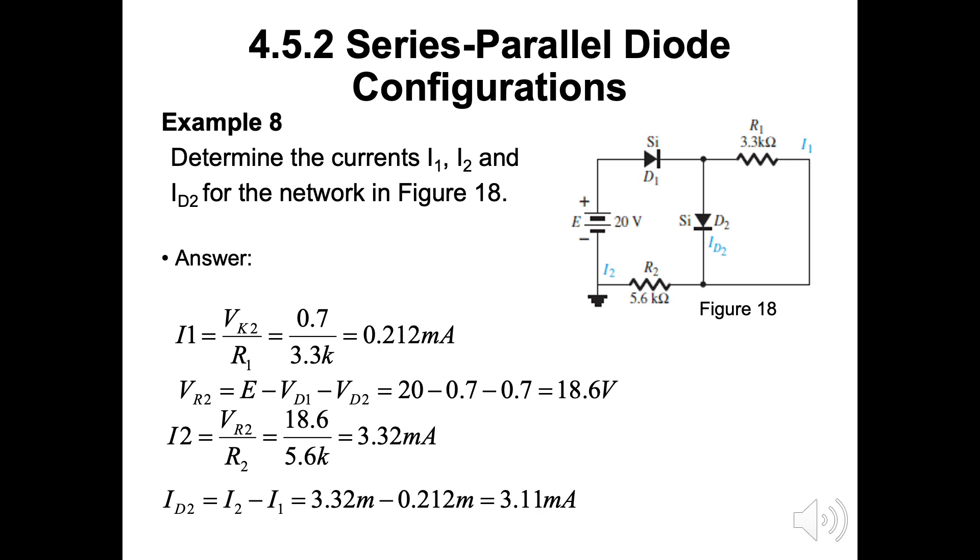Example 8. Determine the currents I1, I2 and ID2 for the network in figure 18. Here Vr1 is similar to Vd2 as they are parallel. I1 is Vr1 by 3.3kΩ then will be 0.212mA. Vr2 is analyzed by considering the loop on the left hand side involved E, D1, D2 and R2. Vr2 then is 18.6V. After getting the Vr2 value, IR2 can be obtained. I2 equals to 3.32mA. For ID2, we need to subtract I1 from I2 and will get 3.11mA.